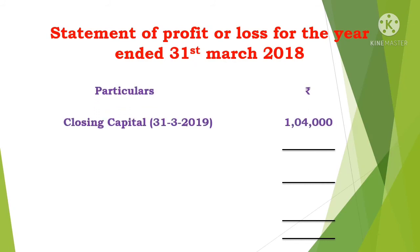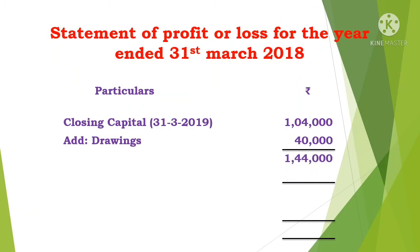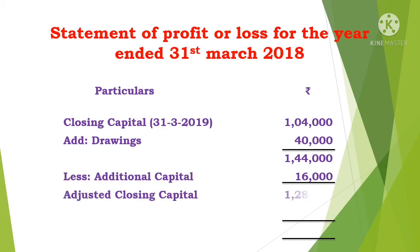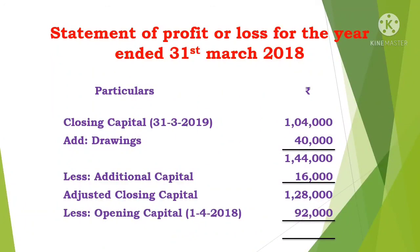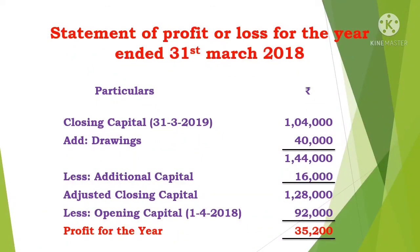Closing capital is 1,04,000. Add drawings 40,000, giving 1,44,000. Less additional capital introduced 16,000. So the adjusted closing capital is 1,28,000. Adjusted closing capital 1,28,000 minus opening capital 92,800 gives a balance of 35,200. This is the profit.